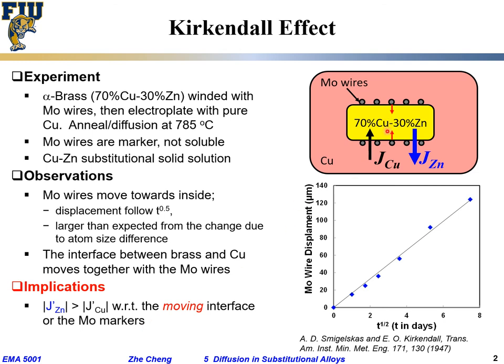If the fluxes were exactly equal, the marker would stay in place. This imbalance has another implication: diffusion here is occurring through the vacancy mechanism, not through an interstitial mechanism.